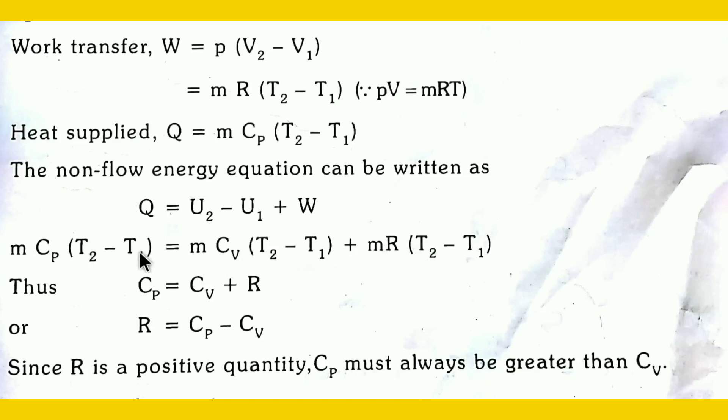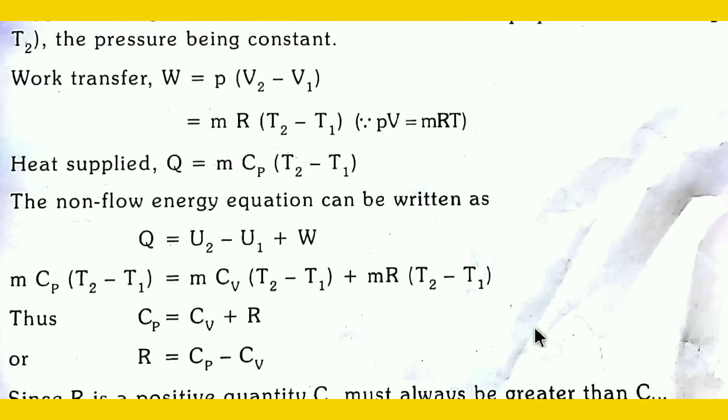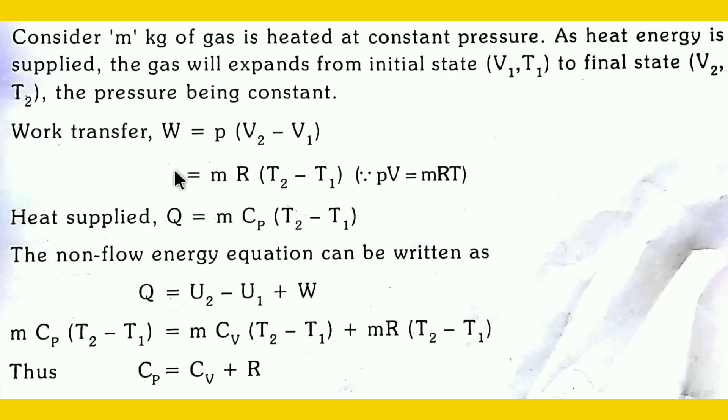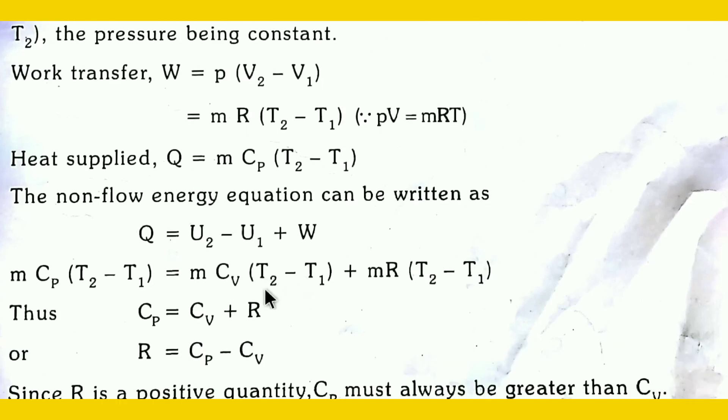m Cp of T2 minus T1 is equal to m Cv of T2 minus T1 plus mR of T2 minus T1. So we have mCp of T2 minus T1 equals mCv of T2 minus T1 plus mR of T2 minus T1.